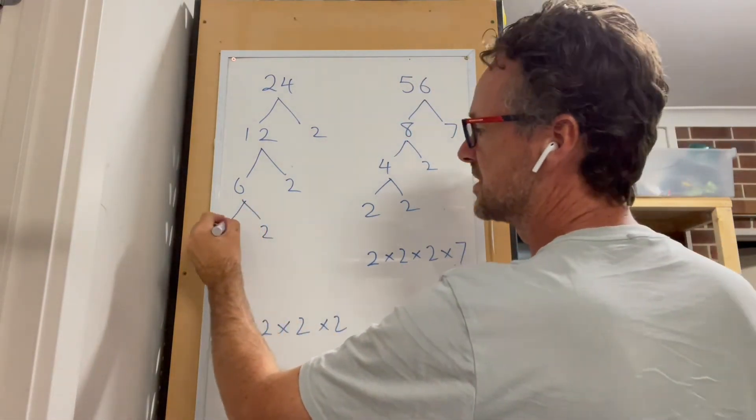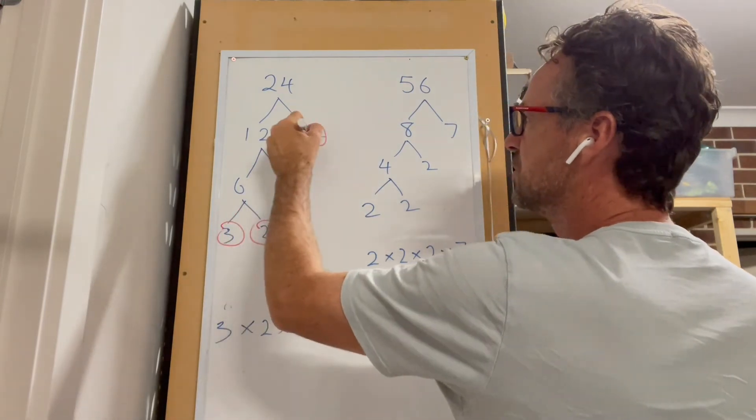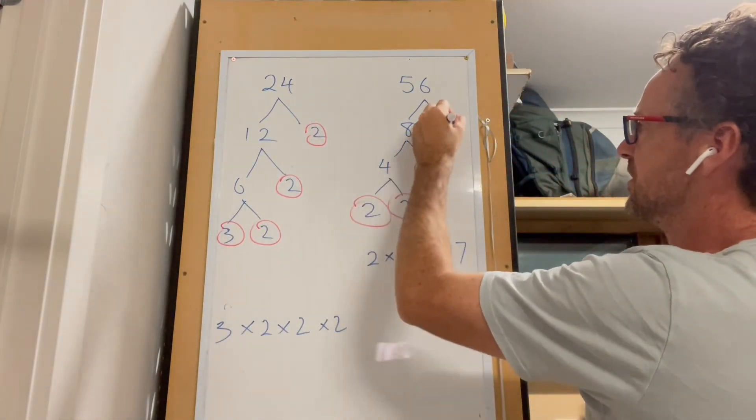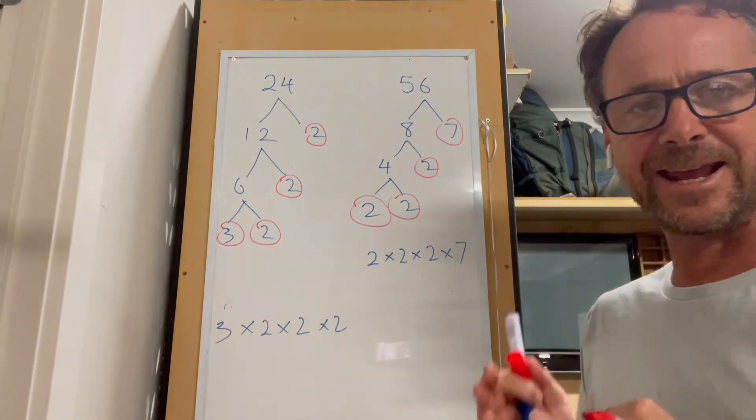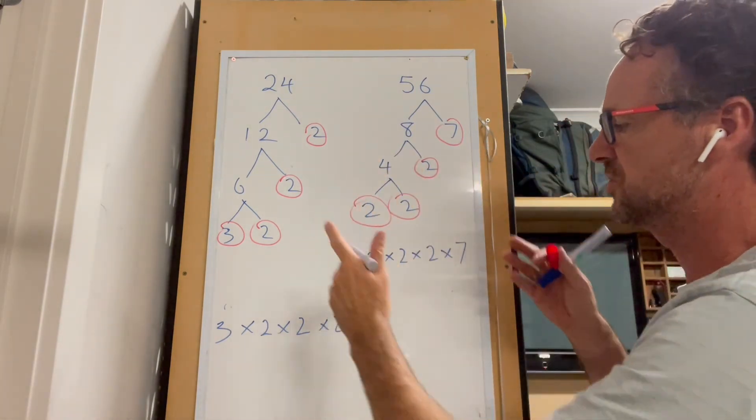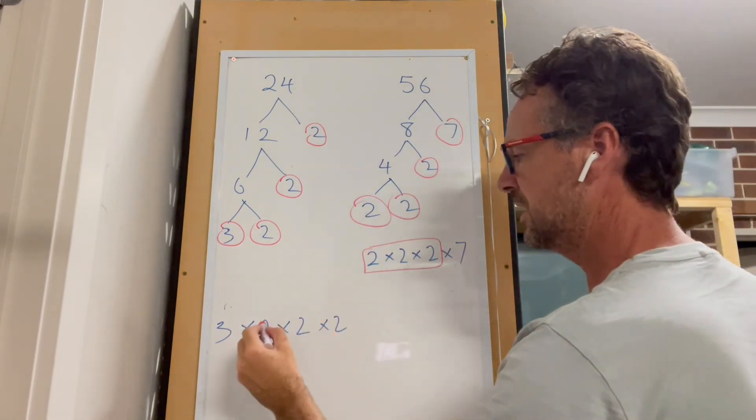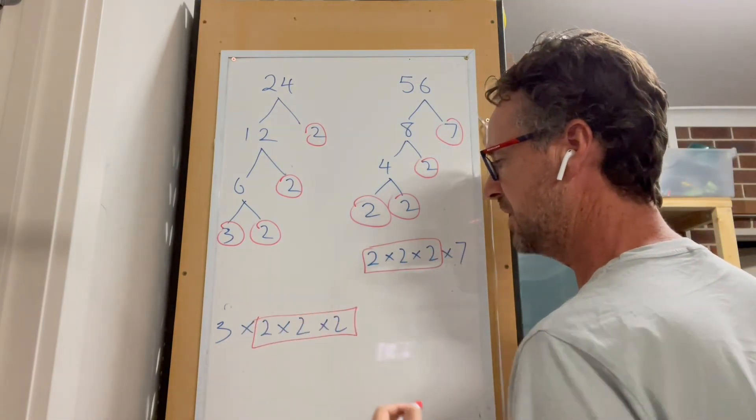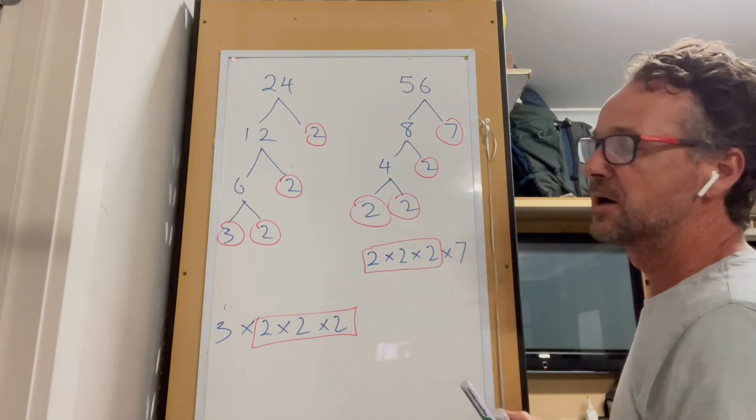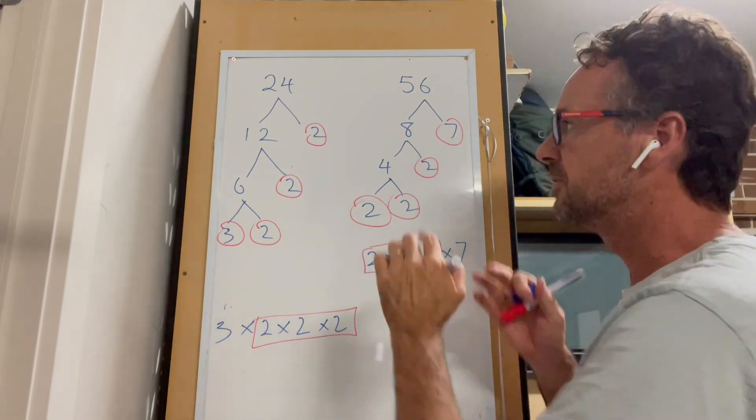Just to show you where those numbers are - that's 3, 2, 2, and 2, and then 2, 2, 2, and 7. Those are the numbers that are at the end of each of these stems of this tree, and we can see that those three 2's and those three 2's match up. So therefore the highest common factor for 24 and 56...